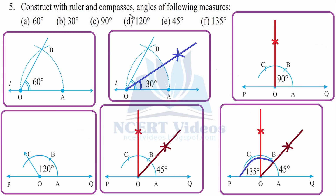Question 5: Construct with ruler and compasses angles of the following measures. For 60 degrees — draw an arc that cuts both rays, then open radius OA and draw an arc where it cuts at B. That gives your 60 degrees. For 30 degrees, it is simply a matter of bisecting 60 degrees — draw your 60 degrees first, then draw an arc from B and from A wherever the arcs cut each other.